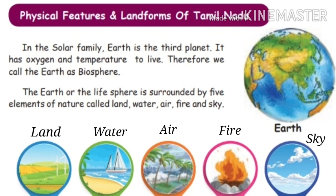In the solar family, earth is the third planet. Do you know about the solar family? There are eight planets: Mercury, Venus, Earth, Mars, Jupiter, Saturn, Uranus and Neptune. Our earth is the third planet. The earth alone has air, water and sunlight, so we call the earth a biosphere.